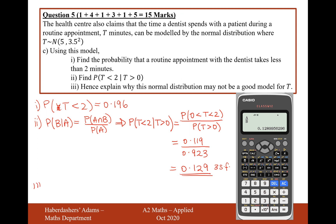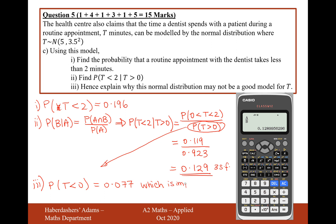Moving on to question three: hence explain why this normal distribution may not be a good model for T. If we look at the probability of T being greater than 0, that infers that the probability of T being less than 0 is approximately 0.077, which is impossible — you can't have a checkup that lasts less than 0 minutes. And about 8% is quite a substantial amount of probability where the model will be wrong, which is impossible.